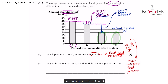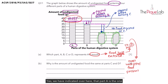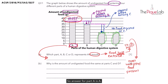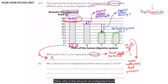So in which part — A, B, C, or D — is there most undigested food present? We have indicated that part A is the one where most undigested food is present. So the answer for this part is A. Next: why is the amount of undigested food the same at part C and D?